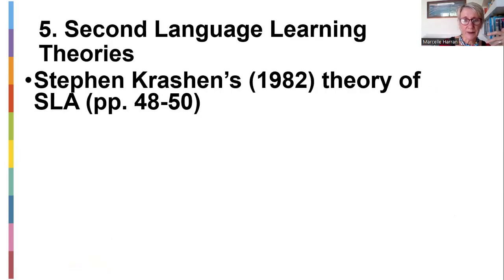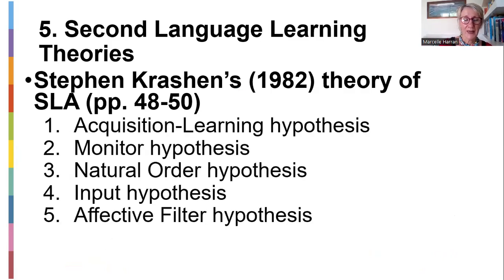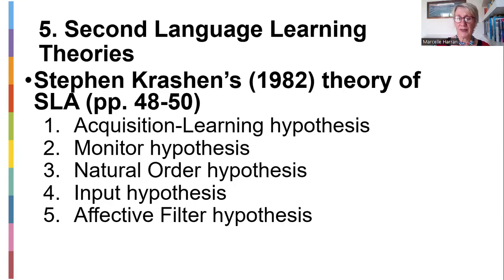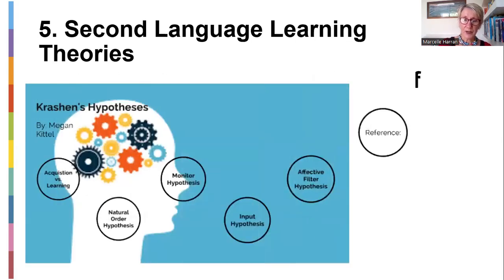This is how acquisition starts working. We move to the last theorist: Steven Krashen, who brought his theory of second language acquisition in 1982. You can read about it on pages 48 to 50 in Ferreira. His five hypotheses are: the Acquisition-Learning Hypothesis, the Monitor Hypothesis, the Natural Order Hypothesis, the Input Hypothesis, and the Affective Filter Hypothesis — covering how our emotions might impact second language learning.